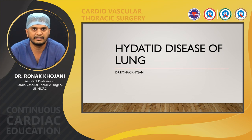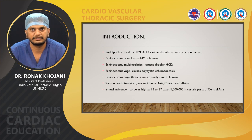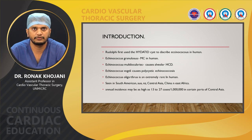Today we will discuss hydatid disease of the lung. Rudolfi first used the term hydatid disease to describe Echinococcus in humans. Hydatid disease is caused by four various species of Echinococcus. Echinococcus granulosus is most common in humans. Echinococcus multilocularis causes alveolar hydatid disease, Echinococcus vogeli causes polycystic echinococcosis, and Echinococcus oligarthrus is extremely rare in humans.